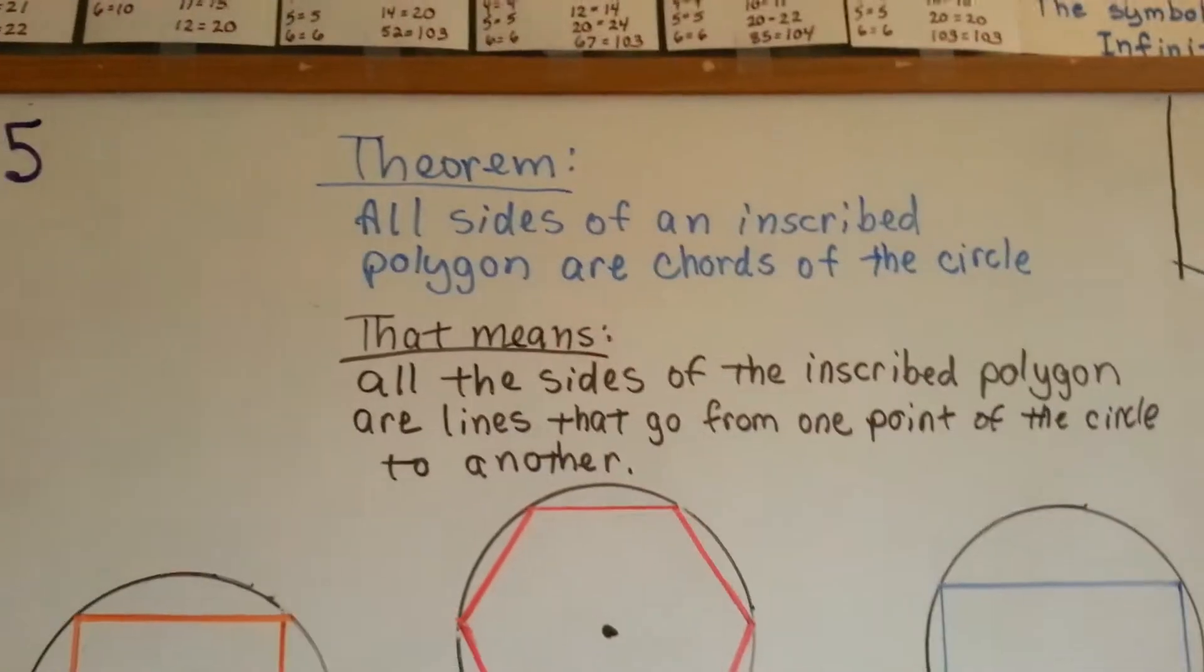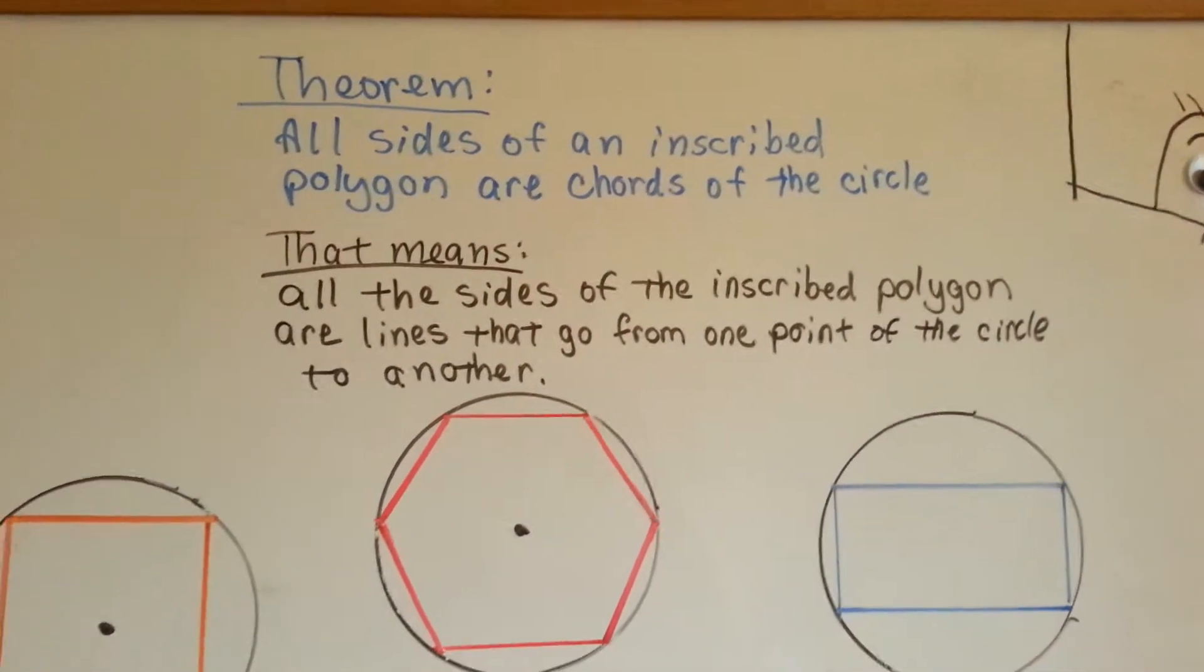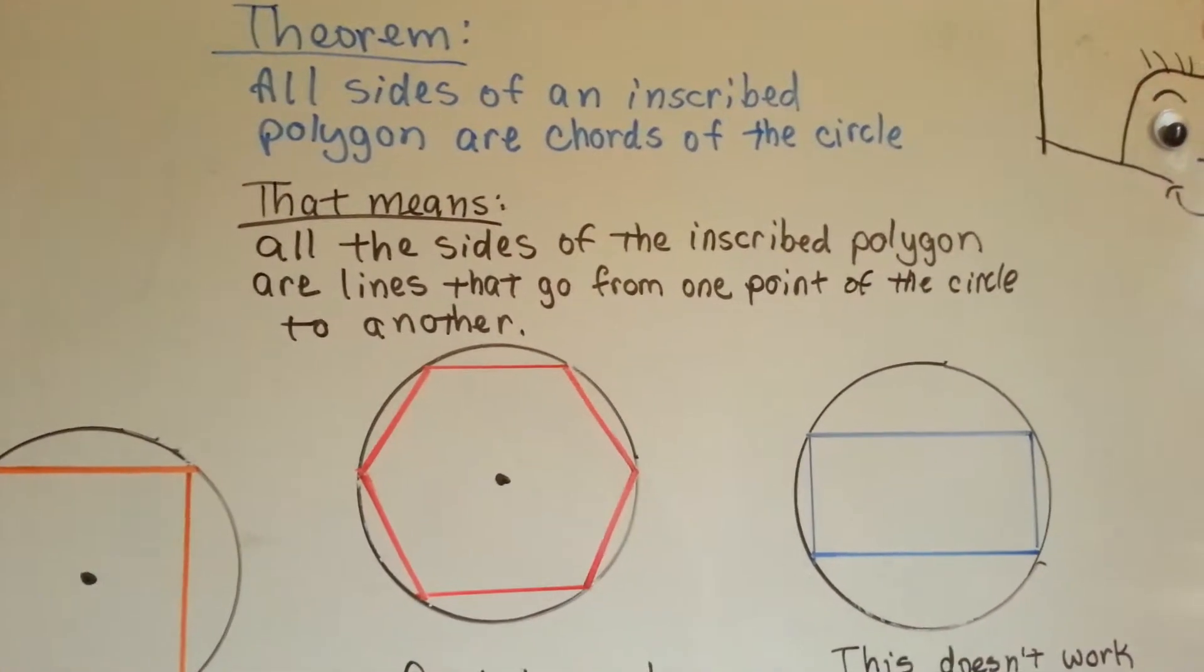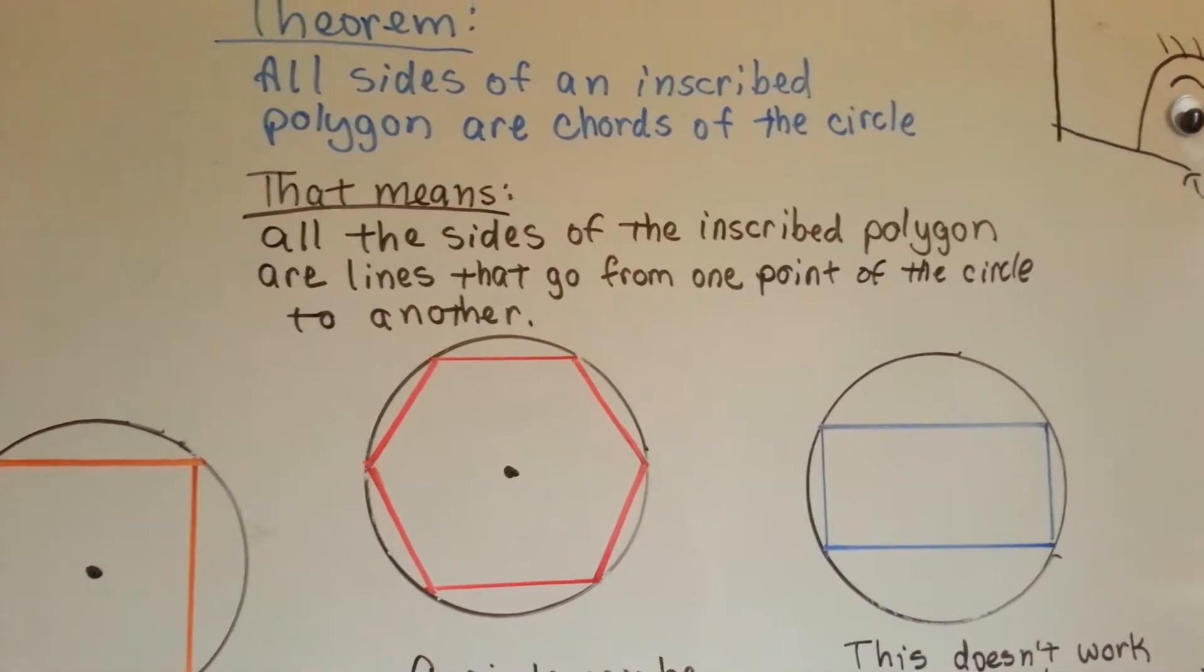I have a theorem for you. All sides of an inscribed polygon are chords of the circle. That means all the sides of the inscribed polygon are lines that go from one point of the circle to another.